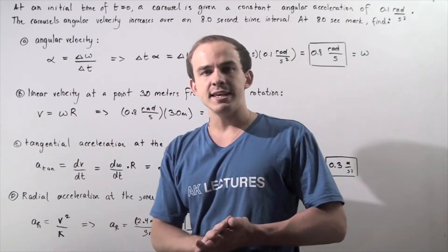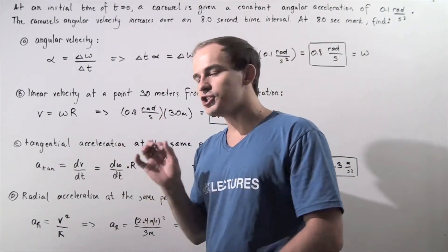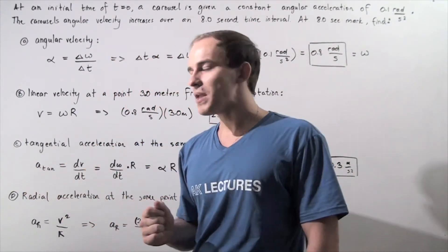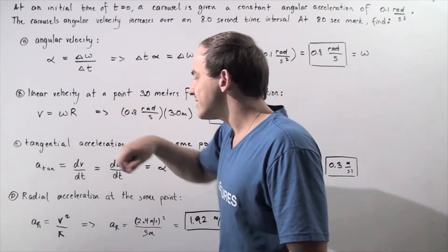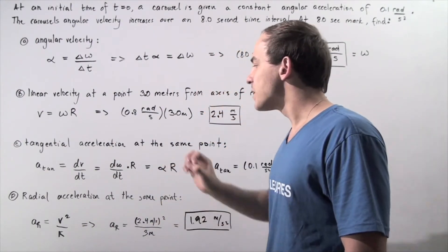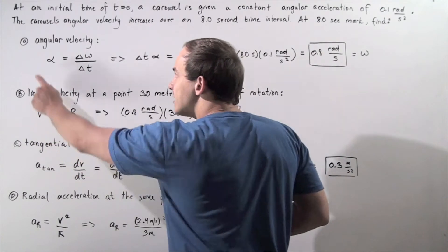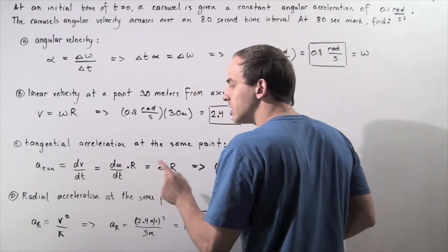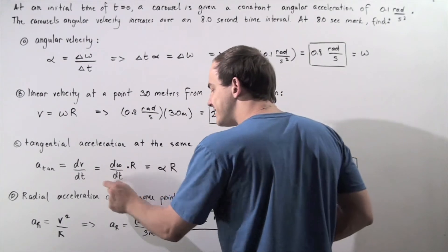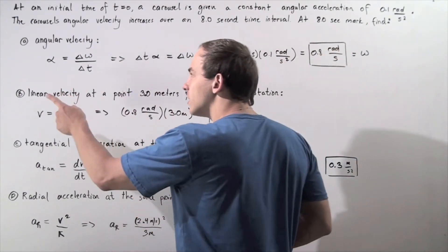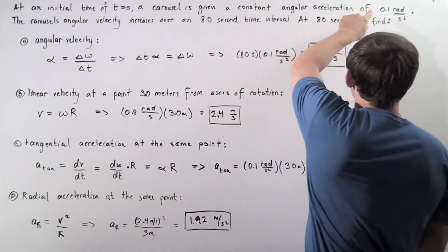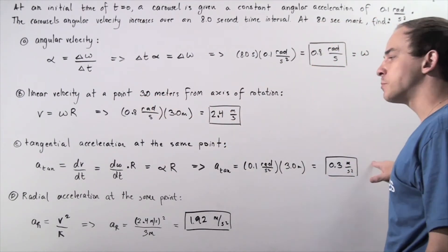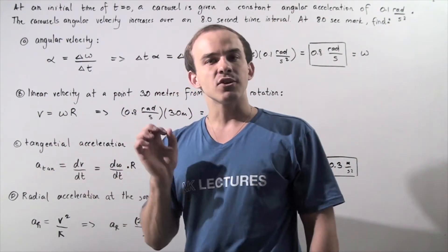Now let's move on to part c. We want to find the tangential acceleration of the object at the same point. Tangential acceleration equals the derivative of instantaneous velocity with respect to time. Since velocity equals omega times radius, we get tangential acceleration equals alpha times radius, because d(omega)/dt is simply alpha, our angular acceleration. Plugging in 0.1 rad/s² times 3 meters gives us 0.3 meters per second squared as our tangential acceleration.